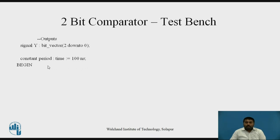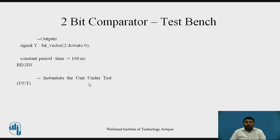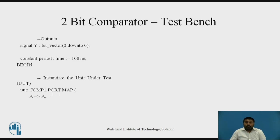After begin, the actual architecture starts. Everything between the architecture line and the begin keyword is the declarative part. Here you first instantiate the unit under test through component instantiation. The syntax is: first mention the name, then the component name — Comp1 as created previously. Then write the port map keyword, and inside the brackets map signals with the component signals: A is mapped with A, B is mapped with B, and Y is mapped with Y.